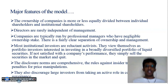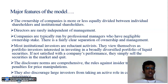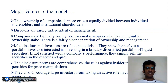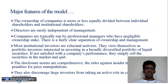The features of the Anglo-Saxon model include: the ownership of the company is more or less equally divided between individual shareholders and institutional investors. Directors are rarely independent of management. Companies are typically run by professional managers who have negligible ownership stakes. There is a fairly clear separation of ownership and management. Most institutional investors are reluctant activists — they view themselves as portfolio investors interested in a broadly diversified portfolio of liquid securities.